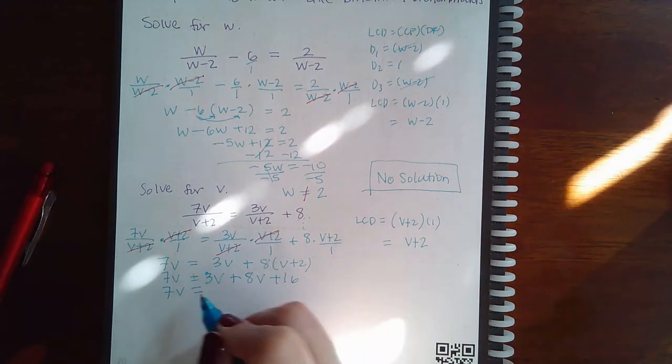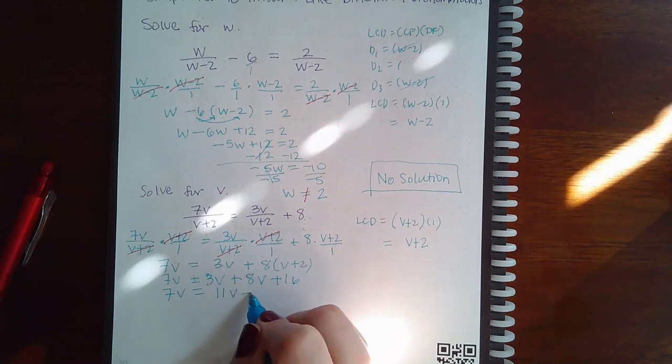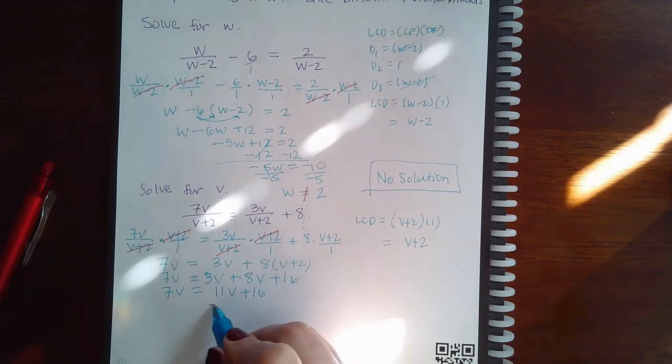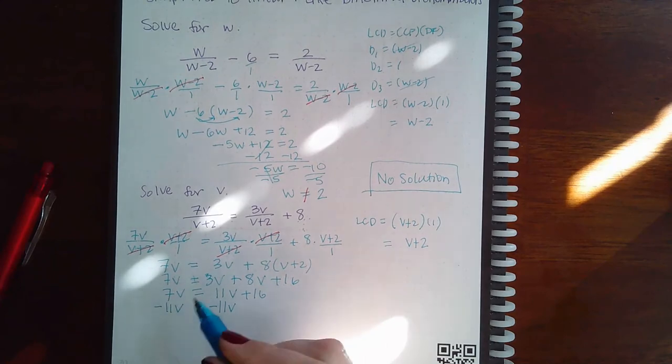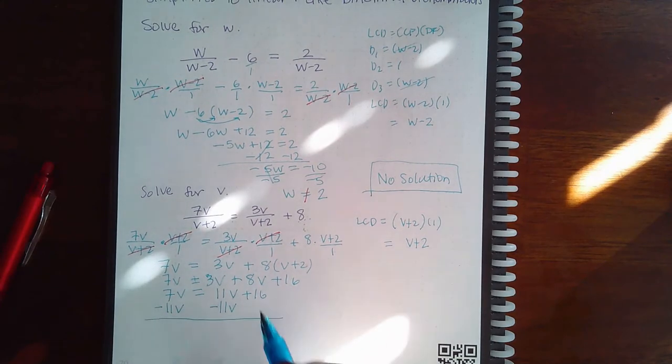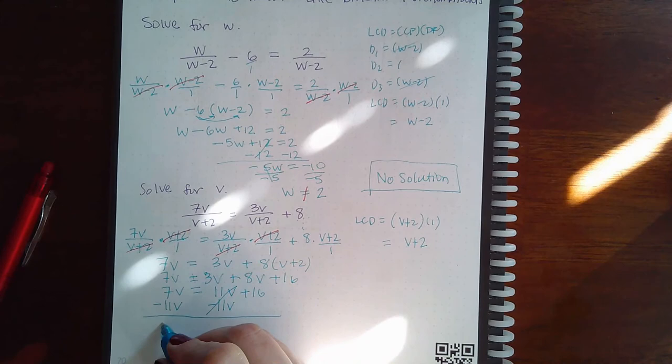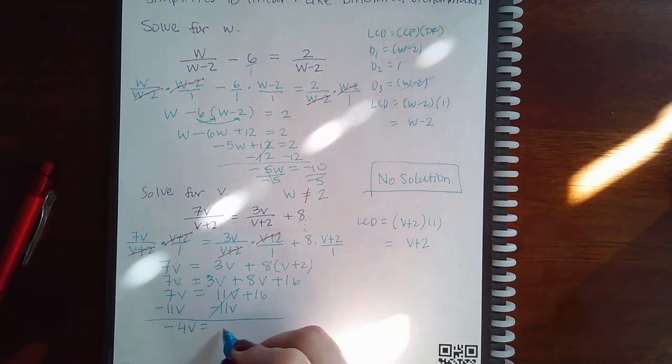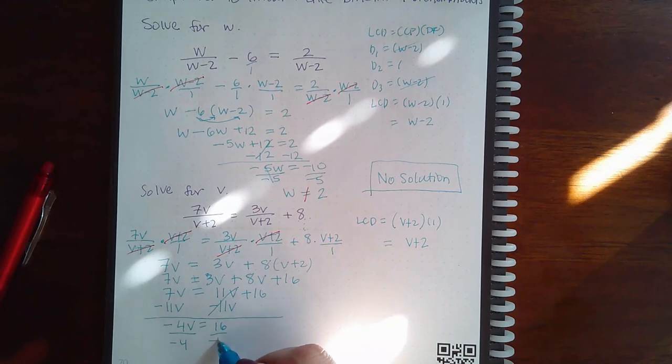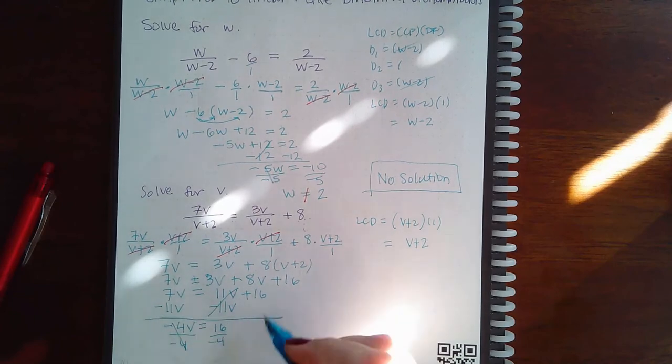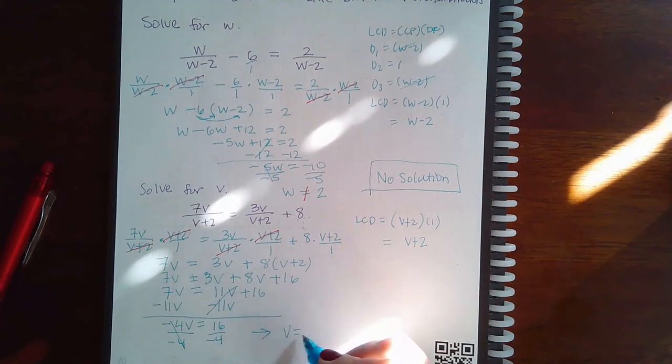I can combine my like terms. I get 11v. And then I can subtract 11v from both sides. And then I get that negative 4v equals 16. I divide by negative 4. And I get that v equals negative 4.